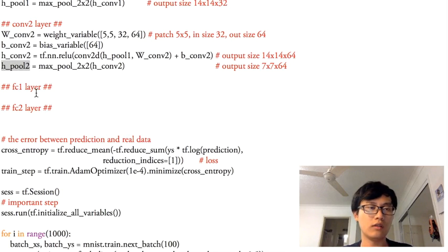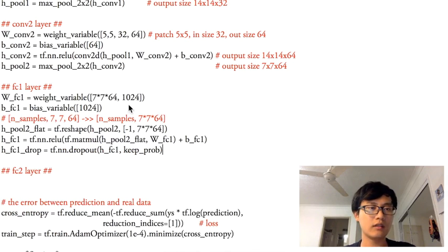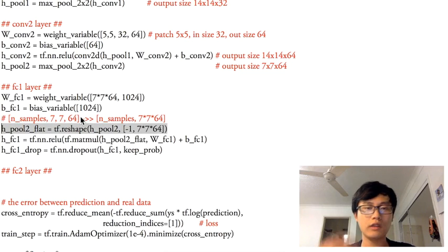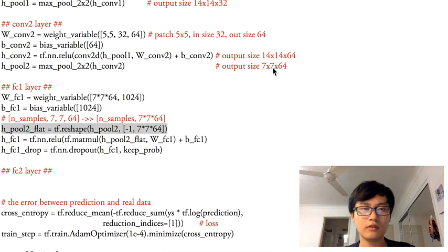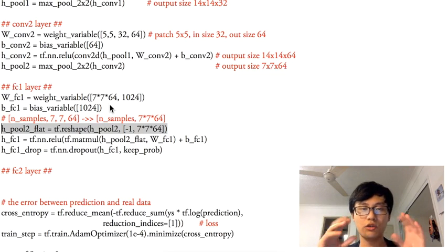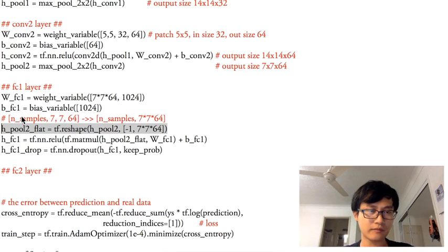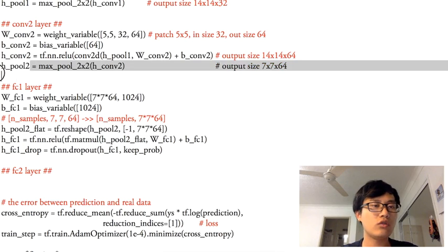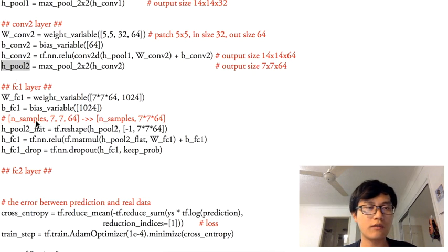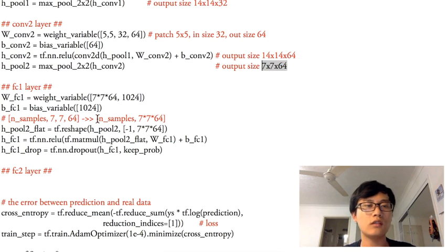We're going to take this result and put it into fully connected layer 1. Before that, note that h_pool2 has a 3D spatial size of 7×7×64, but as a full array it's actually 4D: N_samples × 7 × 7 × 64. The fully connected layer only takes 2D input, so we need to reshape.